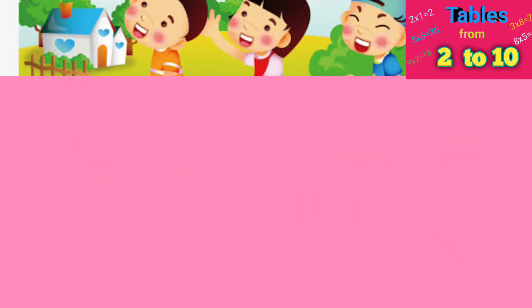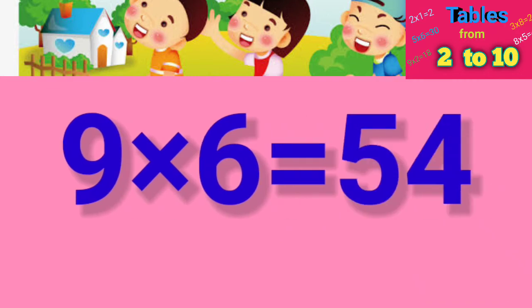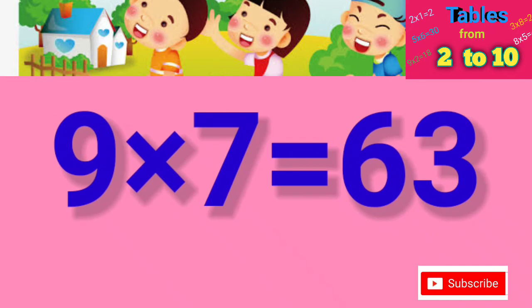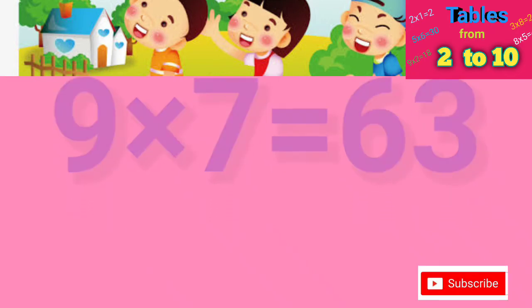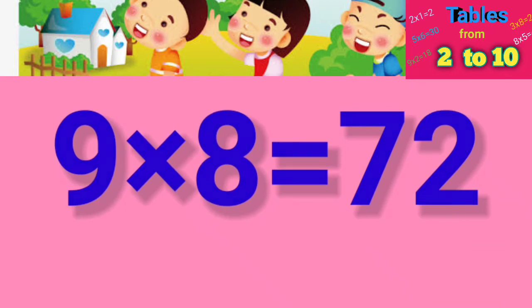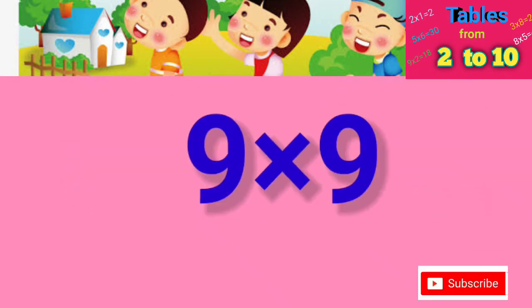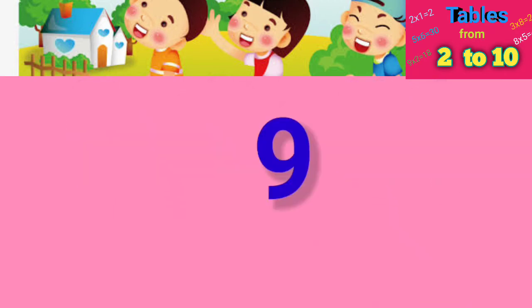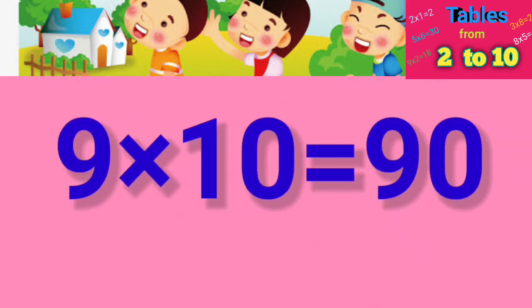9×6=54, 9×7=63, 9×8=72, 9×9=81, 9×10=90.